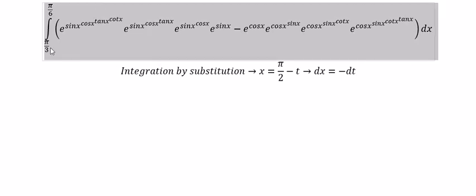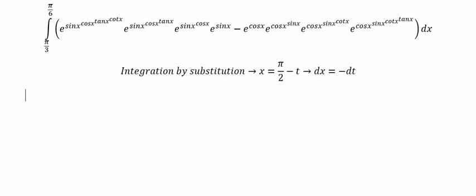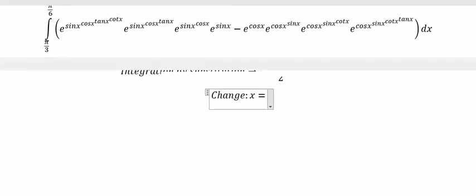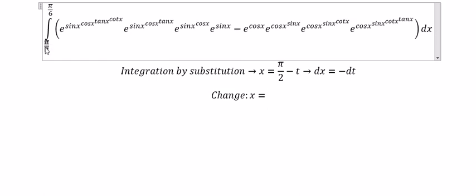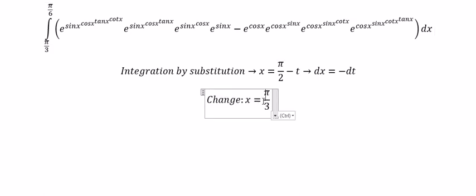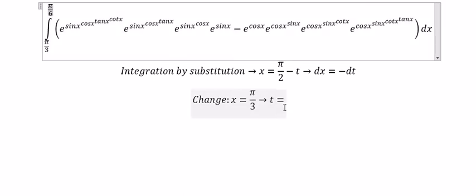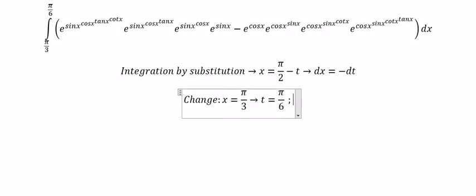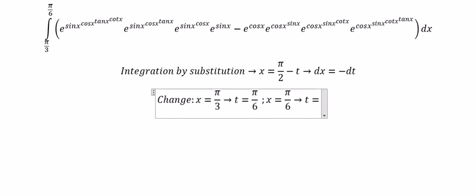Next, we need to change the bounds in here. If x equals π over 3, then t should be π over 6. If x equals π over 6, then t should be π over 3.